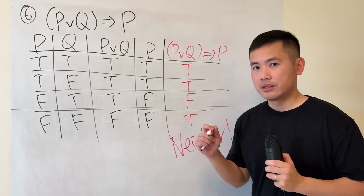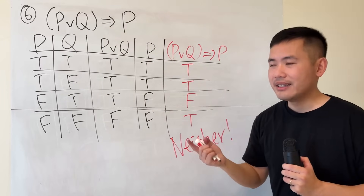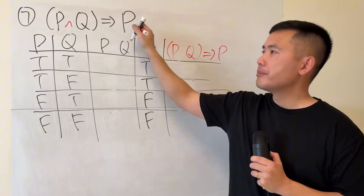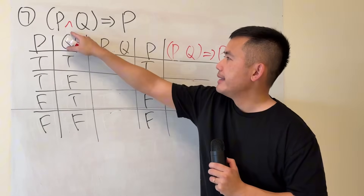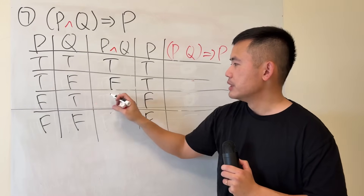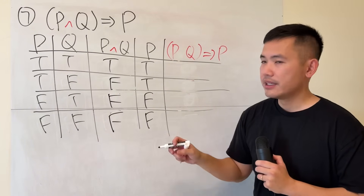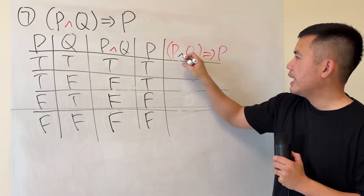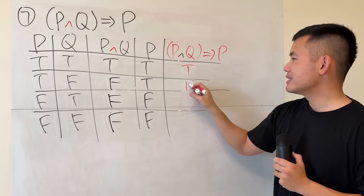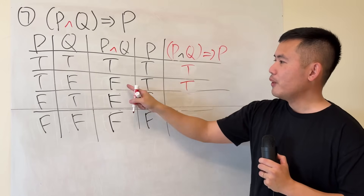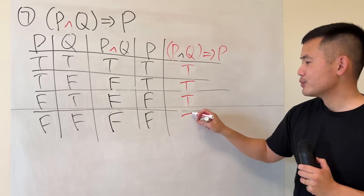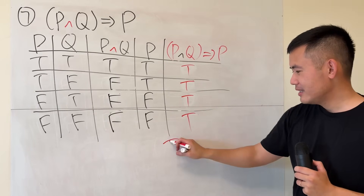How can we change this to get a tautology? Change OR to AND. Example 7: (p AND q) → p. From the truth table: p AND q gives true, false, false, false. Now (p AND q) → p: true implying true is true, false implying true is true, false implying false is true, false implying false is true. We always get true, so this is a tautology.